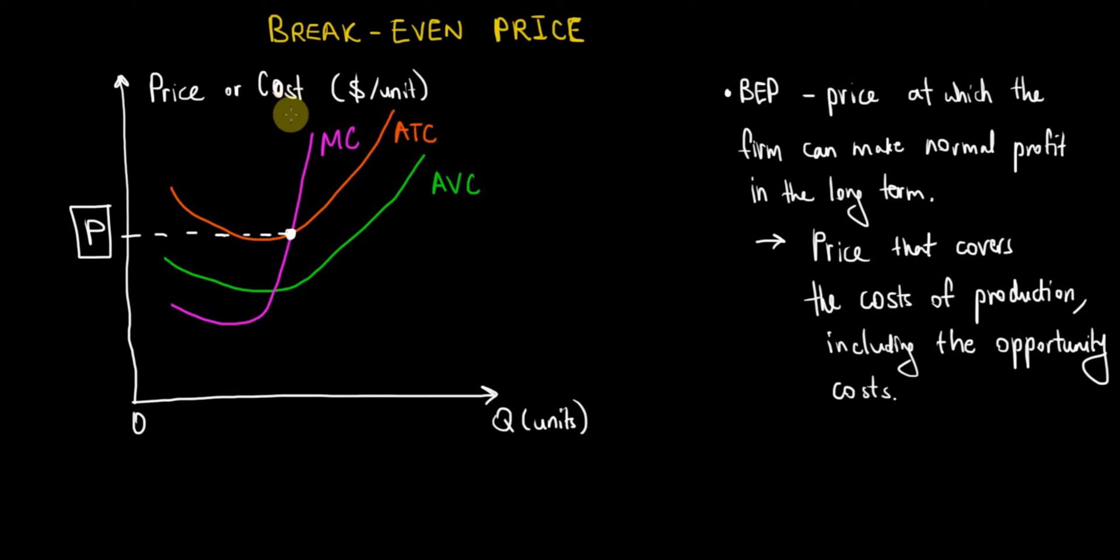This means that the marginal cost, average total cost, and average variable costs are calculated by including the cost of production and the opportunity cost. So when can we have a zero economic profit?